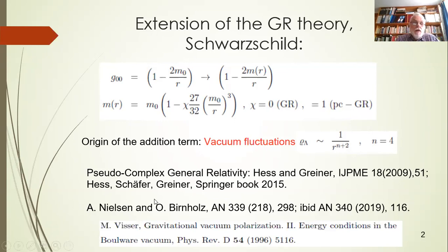These vacuum fluctuations were calculated by Matt Wieser using semi-classical quantum mechanics in a curved space-time background. The density he obtained for the vacuum fluctuation energy is 1 over R to 6 times some complicated function. We use here a phenomenological approach and use 1 over R to n plus 2. For n is 3, we did several calculations in the past, but it was shown in this publication by Nielsen and Birnholz, who were using the results of the first observed gravitational wave event in 2016, that n has to be at least 4. So here I will present results for n equal to 4.